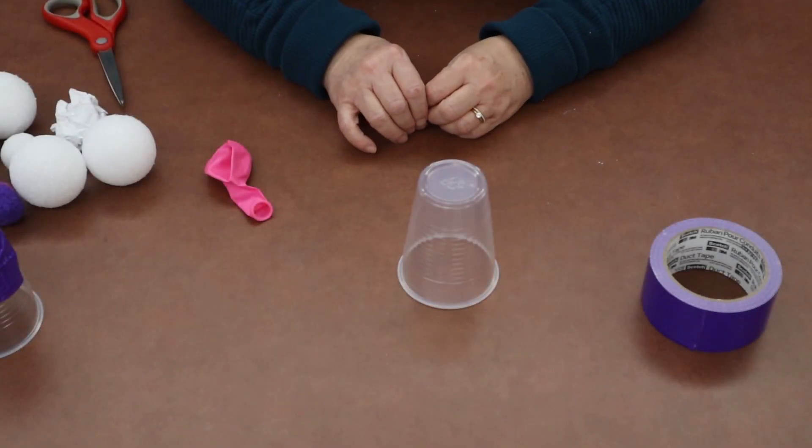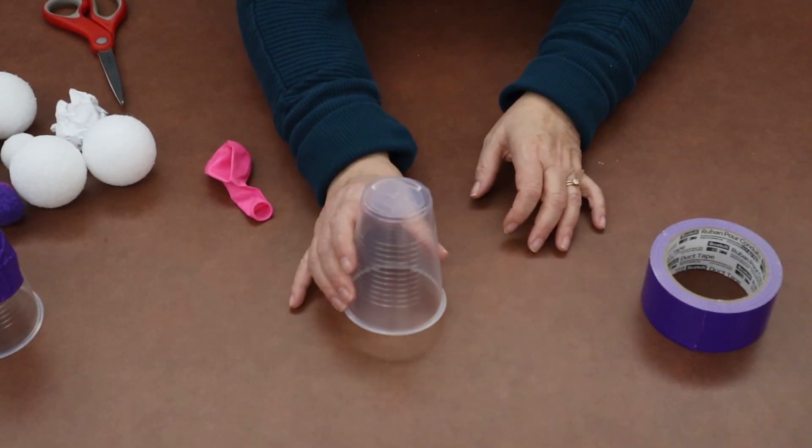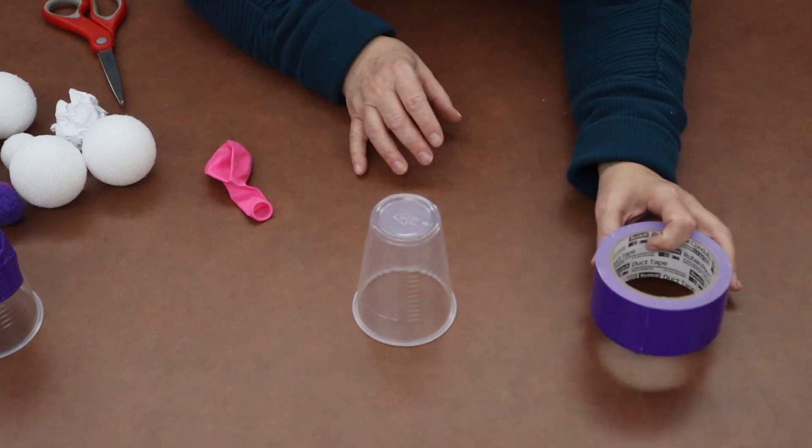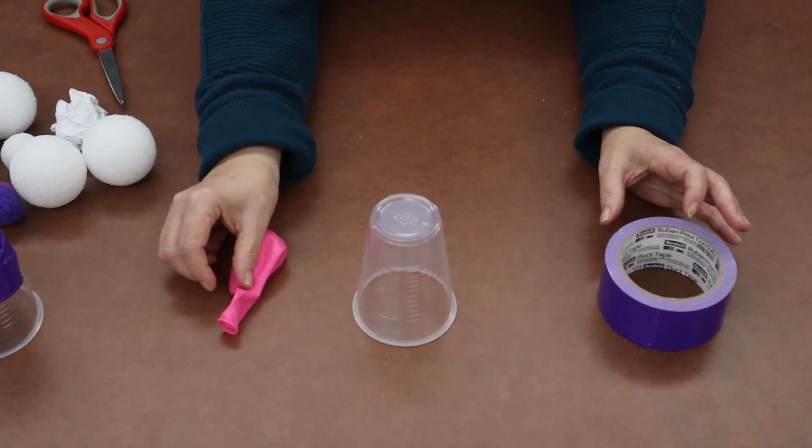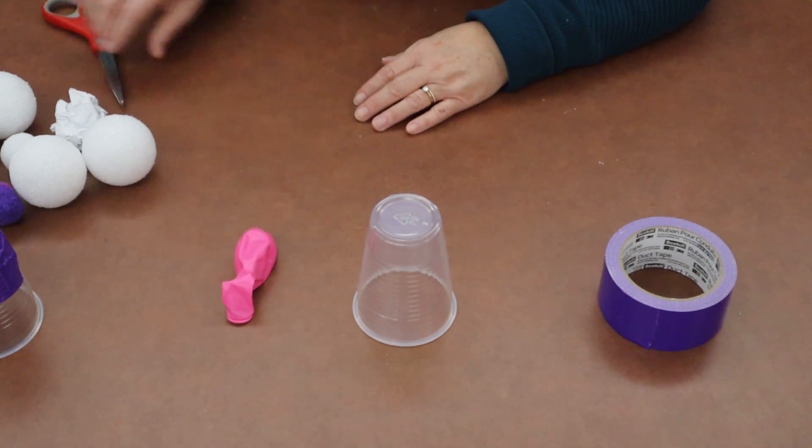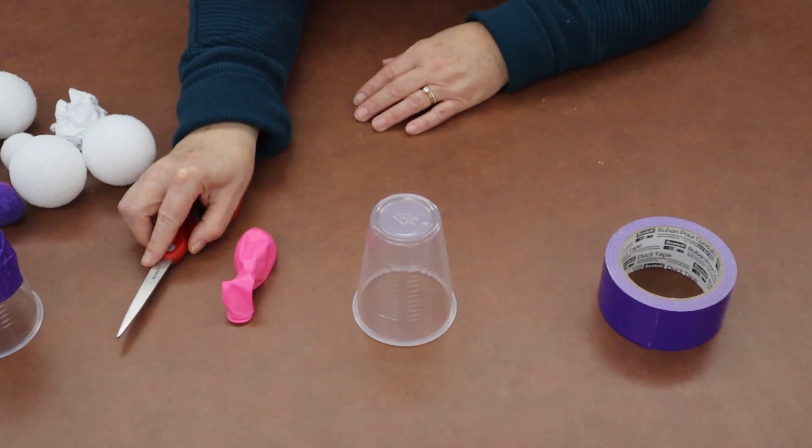Looking in your Take and Make bag, you will have three things. You'll have a cup, you'll have some duct tape, and you'll have a balloon. And like I said previously, you will need a pair of scissors to complete this project.